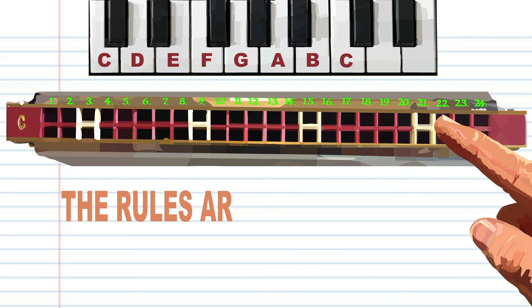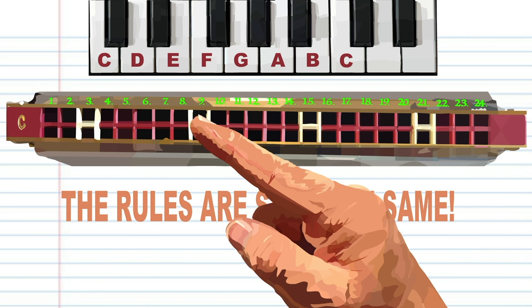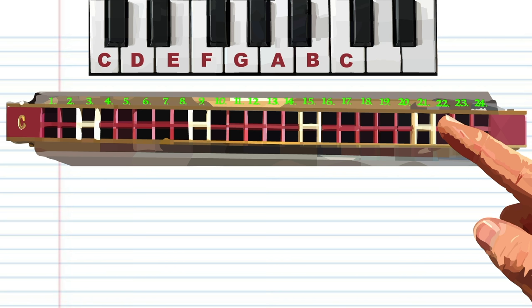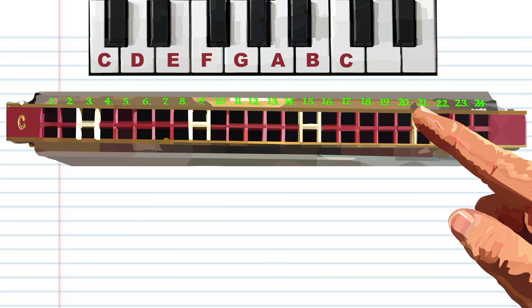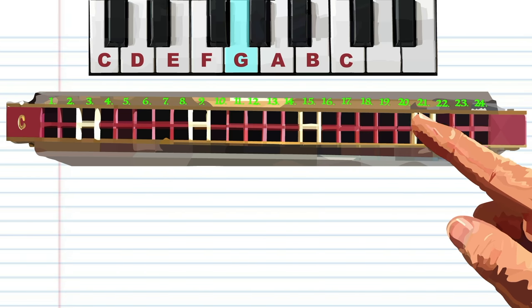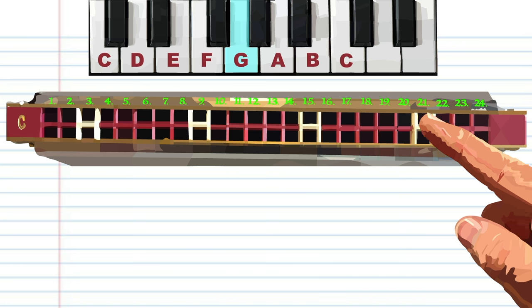Likewise, if your tremolo is in another key, holes 3, 9, 15, and 21 will represent the bass note for whatever key your tremolo is in. For example, if your tremolo is in the key of G, then holes 3, 9, 15, and 21 will all make the G sound.